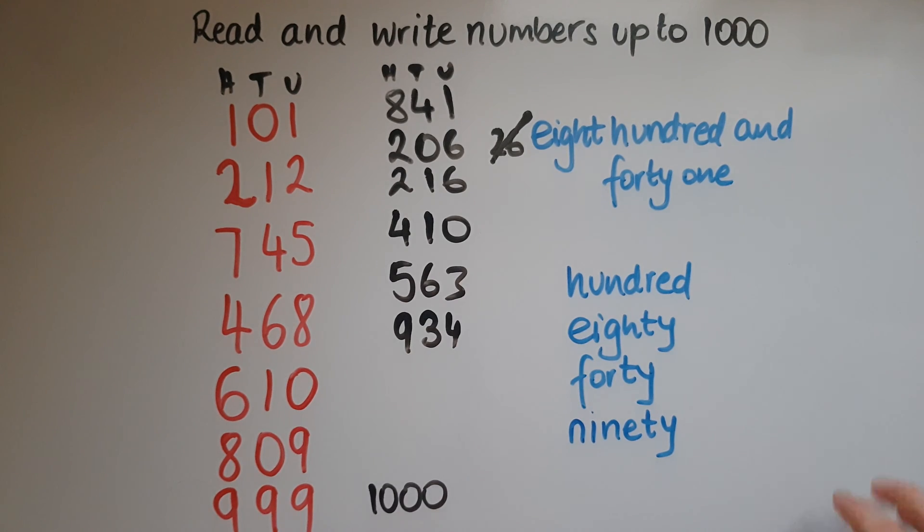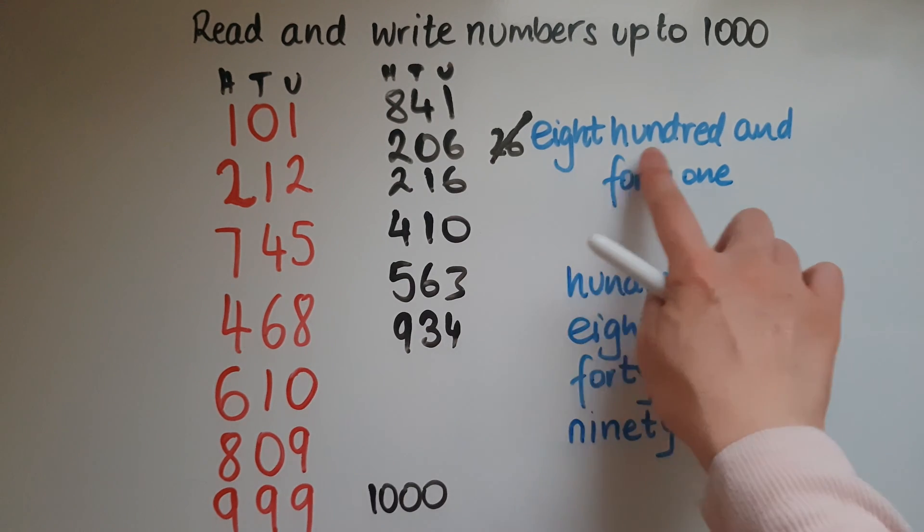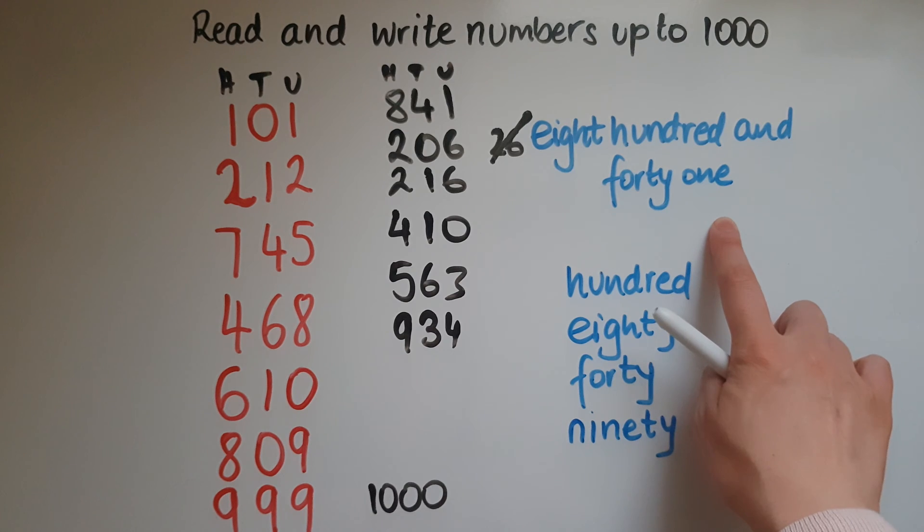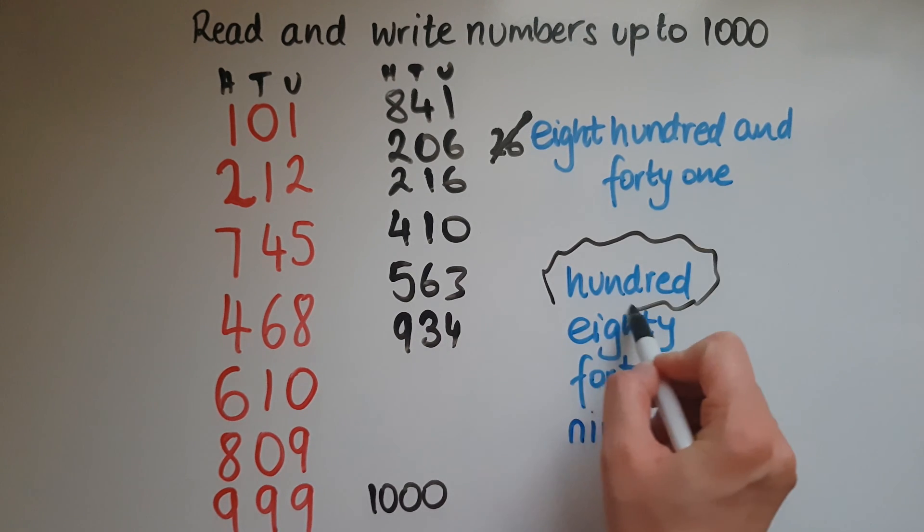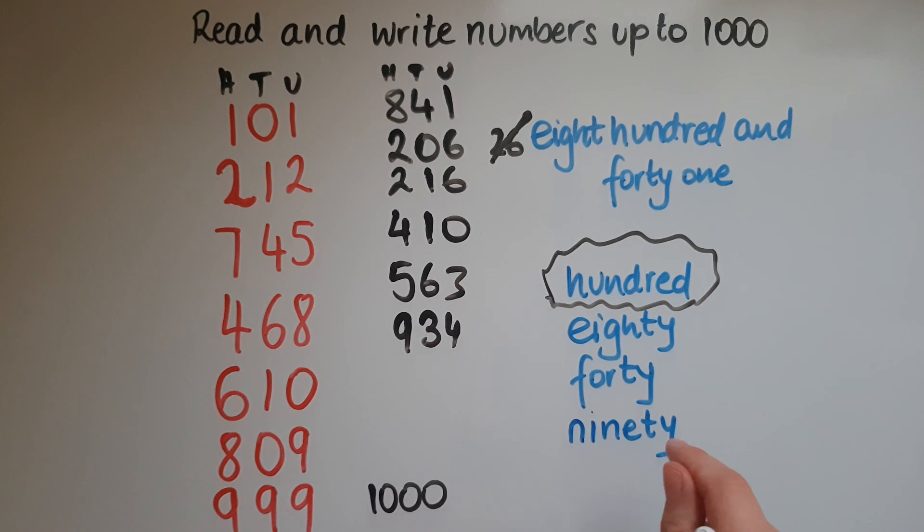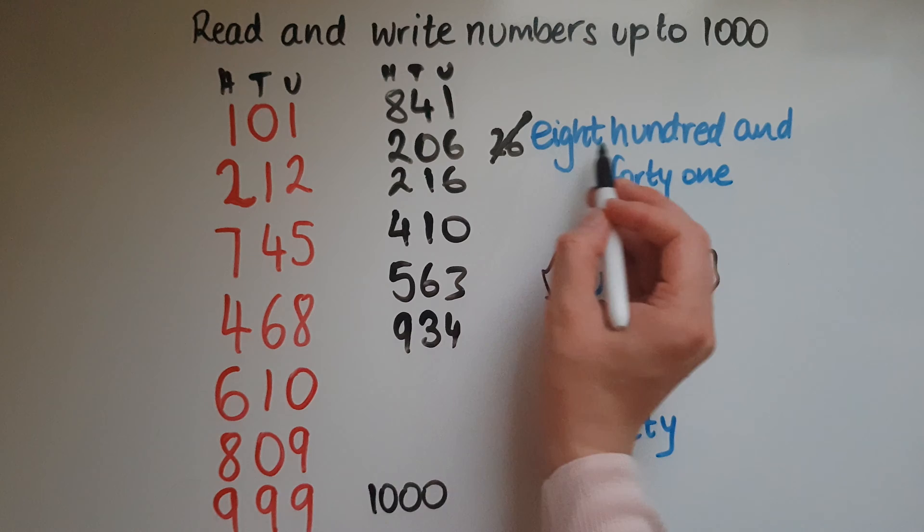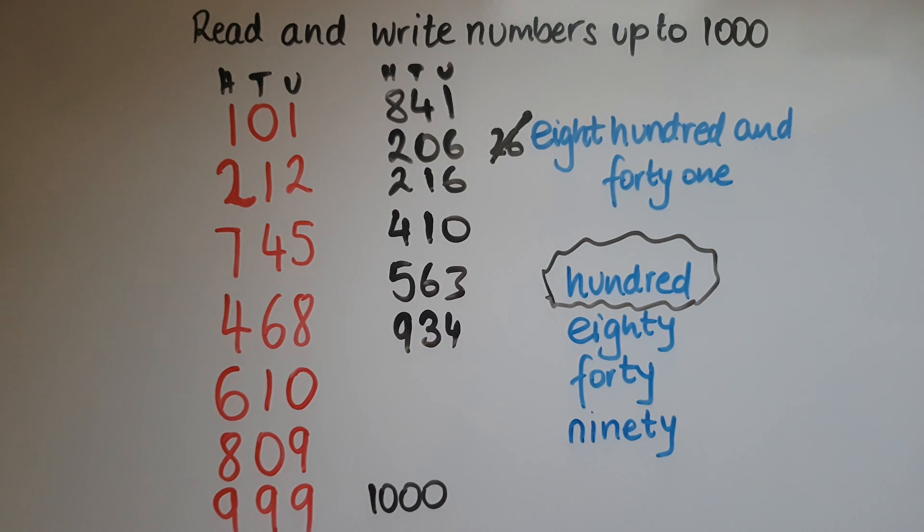You'd also need to know how to write these numbers up to 1000 in words. So 841 is just one example. Key words are hundred that you probably didn't know before. So hundred, one hundred, two hundred. In front of it you can write 8, 1, 2, 3, 4, 5, numbers that we've seen and looked at before. And of course you need to know your tens because we've looked at those as well at entry 2.